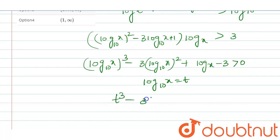...t³ - 3t² + t - 3 > 0. Here, the roots of this equation: we can see that (t² + 1)(t - 3) > 0.